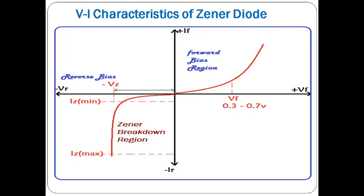The VI characteristics of the Zener diode are similar to the p-n junction diode in forward bias. In reverse bias, up to the Zener breakdown voltage VZ, only a very small leakage current flows. After reaching the Zener breakdown voltage, the sudden current increase through the Zener diode is called the knee current or IZ minimum. After the knee point, the current increases rapidly to IZ maximum. IZ minimum is the minimum current to maintain reverse breakdown operation; IZ maximum is the maximum current the Zener diode can safely carry.